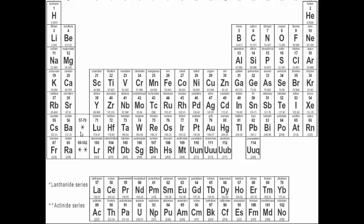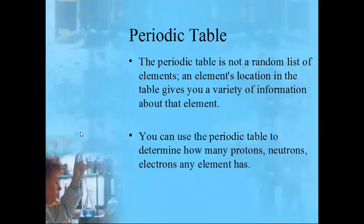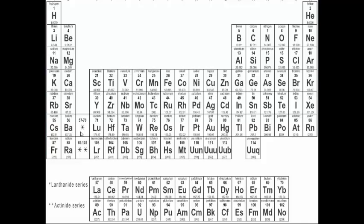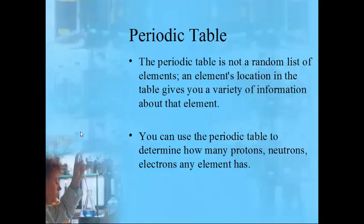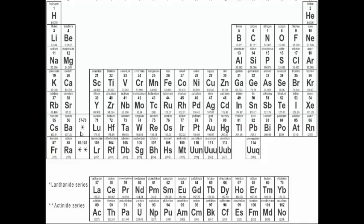The periodic table is sometimes color-coordinated based on where the elements are. The layout isn't random — there are specific reasons why each element is placed where it is. By knowing how to read a few characteristics of the periodic table, you can tell a lot about an element based on its position, including how many protons, neutrons, and electrons it has.